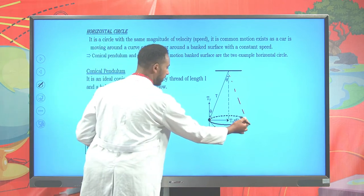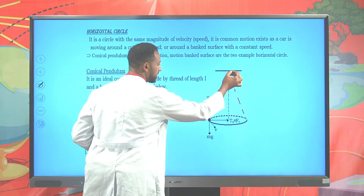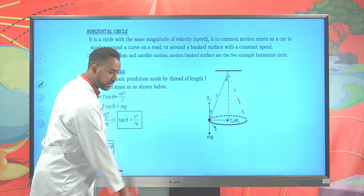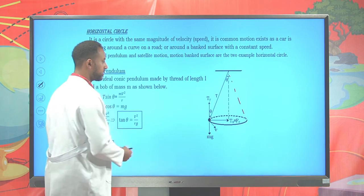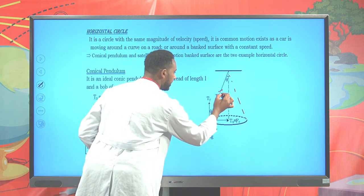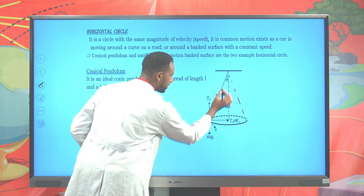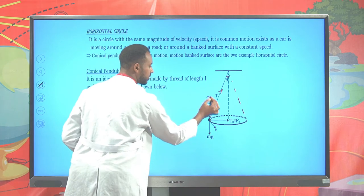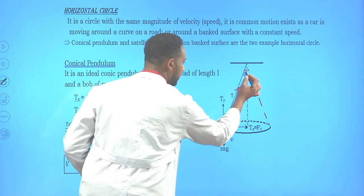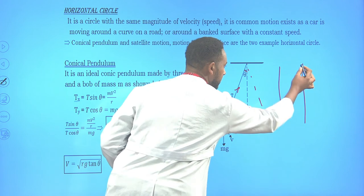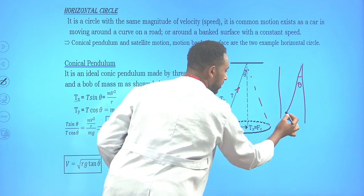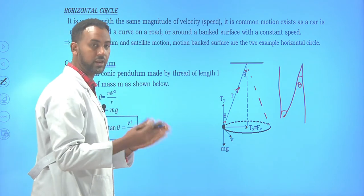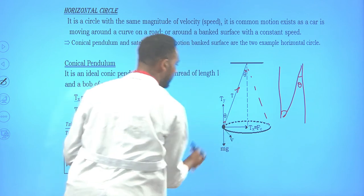For a conical pendulum, you attach a string and a mass. At some angle, you make it form a cone. It forms a tension T here at an angle theta. The vertical component of the tension, T_y, equals T cosθ, because the angle is adjacent to the vertical. And that is balanced by Mg.